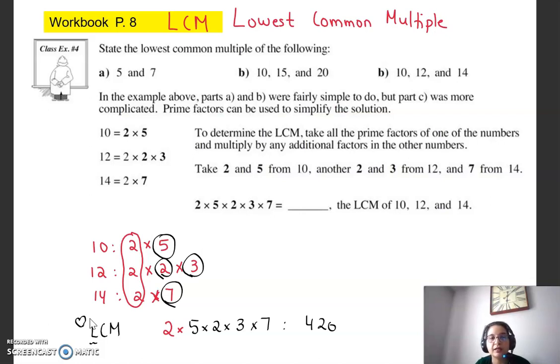Another way of thinking about LCM is also that you want to include all the factors, but you don't want to repeat the numbers. So if something is repeated in two or three of them, you only want to count it once. So this five, this two, this three, and this seven weren't repeated. But this two was repeated in all three. So I only counted it once.